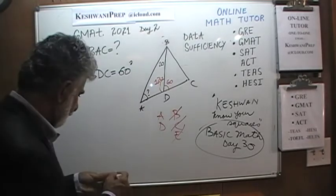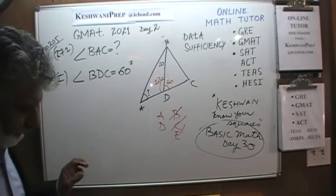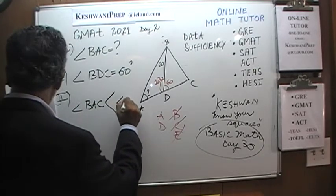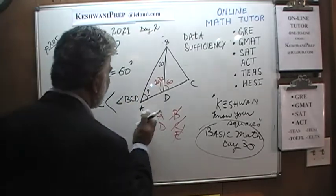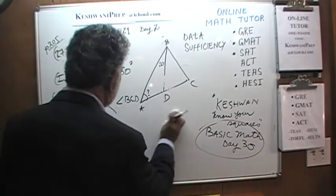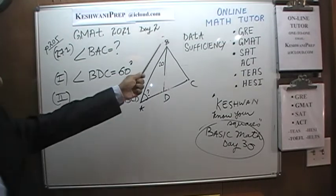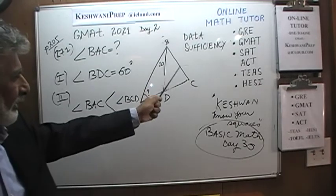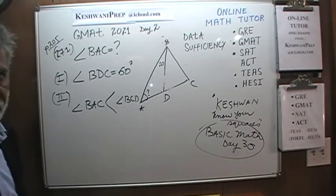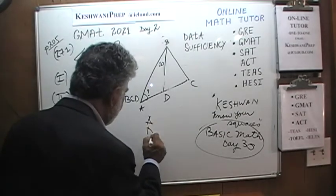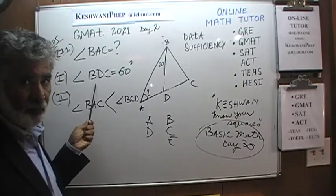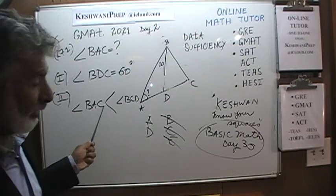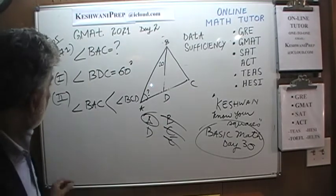The second statement tells us that angle BAC is smaller than angle BCD. Simply knowing that angle BAC is smaller than BCD does not enable us to figure out what angle BSC is — the second statement by itself is worthless. Since statement one by itself was enough, we already crossed out B, C, and E. The second statement by itself is not enough, so the answer is A.